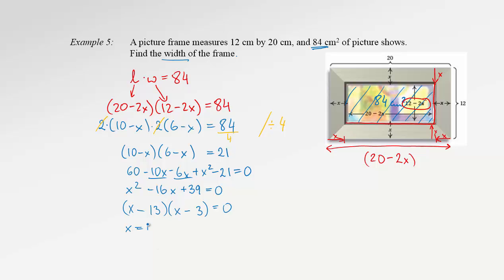Therefore, our x could be 13 or 3. Which one makes sense? Well, since x is the width of the frame and the whole picture with two widths is barely 12 inches wide, then obviously x equals 13 is way too large.